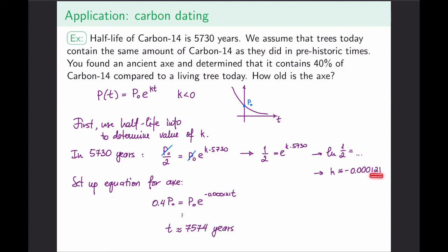While 5,730 years seems like a long half-life, it is good for dating things that have existed since humans have existed. However, it is not very good at dating dinosaur fossils. To date dinosaur fossils, we need a different element with a much larger half-life, because the amount of carbon-14 in dinosaur bones would be basically non-existent. We will need to look at elements with a much longer half-life to date much older objects. I encourage you to look up what radioactive elements are used in dating dinosaur fossils.